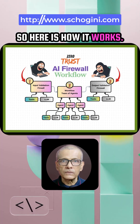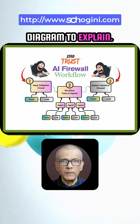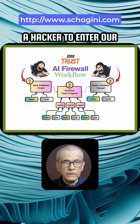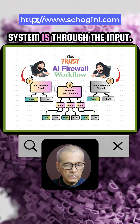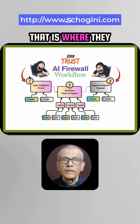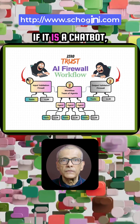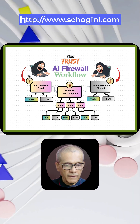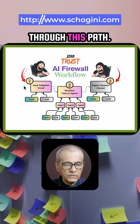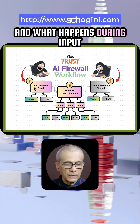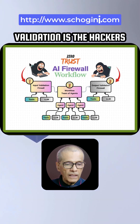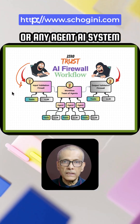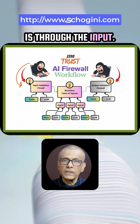Here is how it works. I have prepared a flow diagram to explain. Input validation — the entry point for a hacker to enter our system is through the input. That is where they enter the prompt. If it is a chatbot, that is where they type their queries.